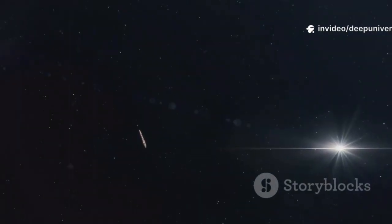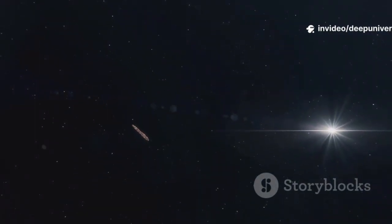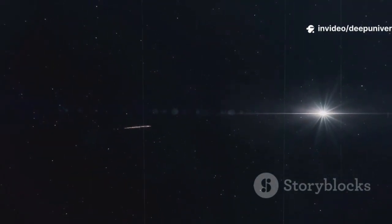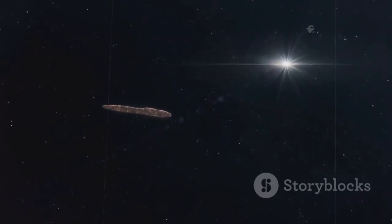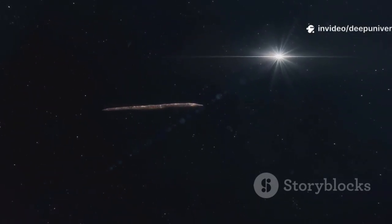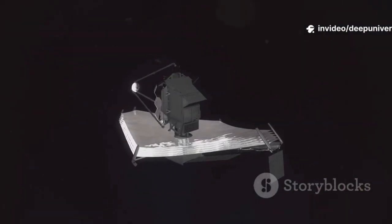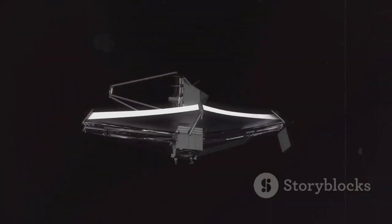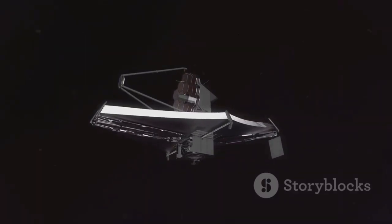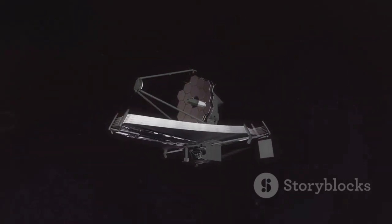Before this, we'd only glimpsed two other interstellar visitors, each one a fleeting mystery that left us with more questions than answers. The mysterious Oumuamua and comet Borisov were the first hints that our solar system is not isolated, but part of a much larger cosmic story. Now with 3i Atlas, our most advanced observatory is ready to unlock new secrets. Each observation brings us closer to understanding the origins of these interstellar wanderers and the stories they carry from distant worlds.